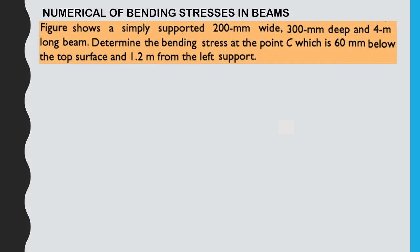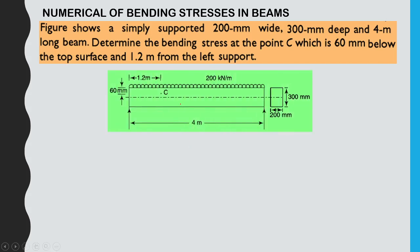Problem 1: A simply supported beam is 200 mm wide, 300 mm deep, and 4 meters long. We need to determine the bending stresses at point C, which is 60 mm below the top surface and 1.2 meters from the left support. The cross section is 200 mm wide and 300 mm deep as mentioned.